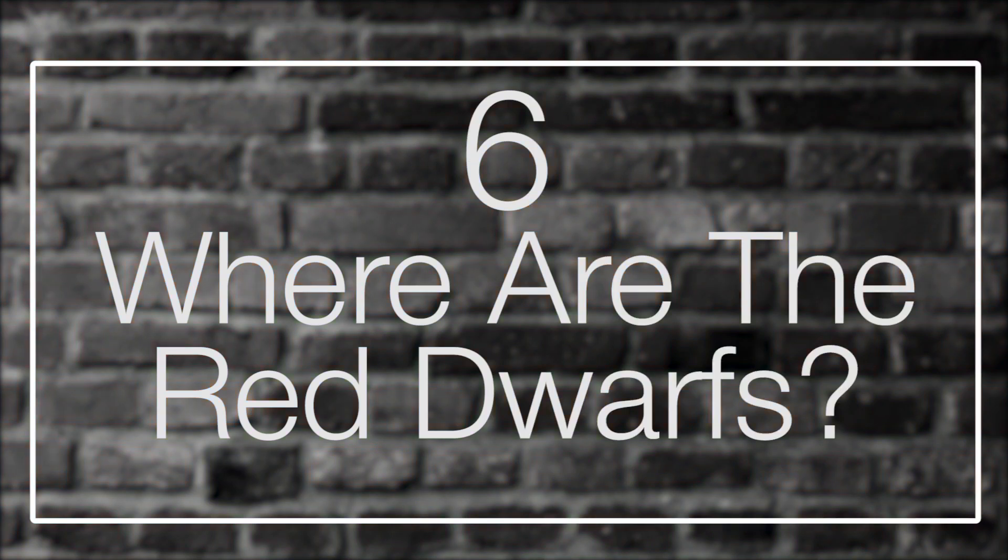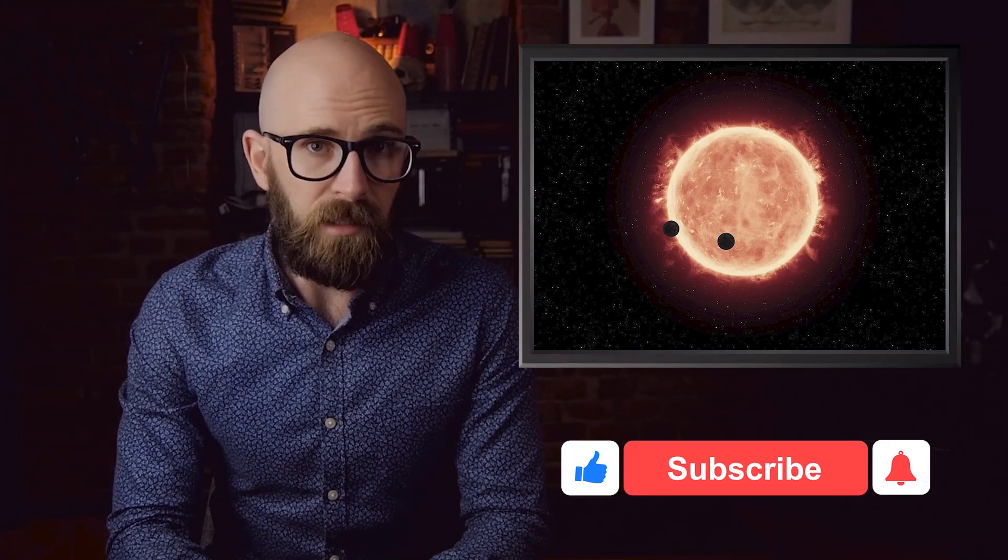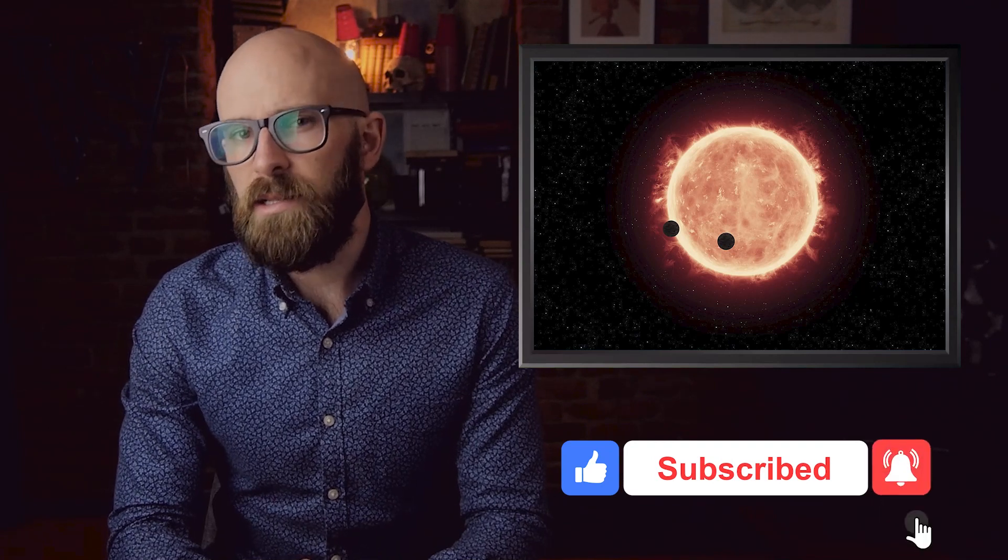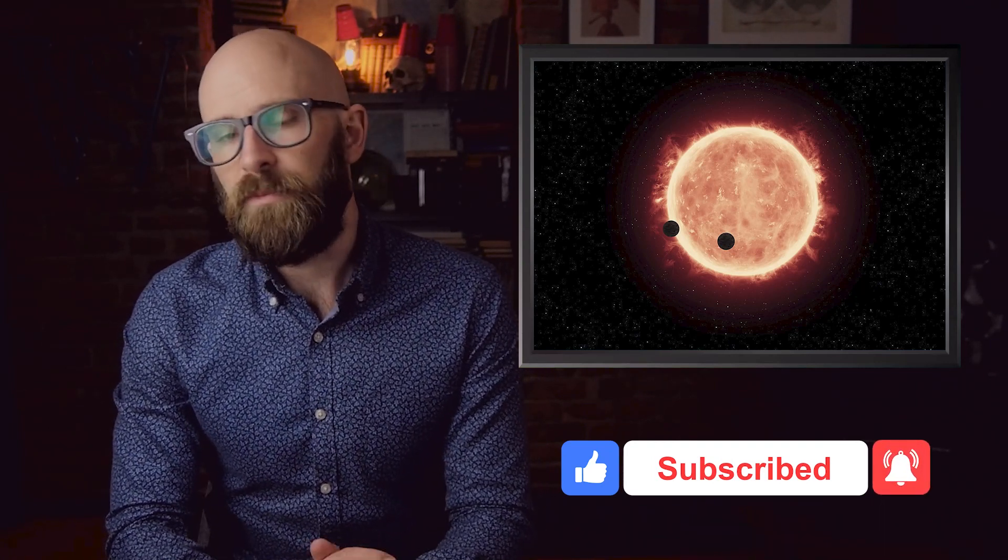6. Where Are The Red Dwarfs? Back in the 80s, when the idea of Nemesis was first theorized, it was thought that the sun's companion would be a red dwarf. Red dwarfs make up the majority of stars in our galaxy, and most of the exoplanets we've observed so far orbit these types of stars.